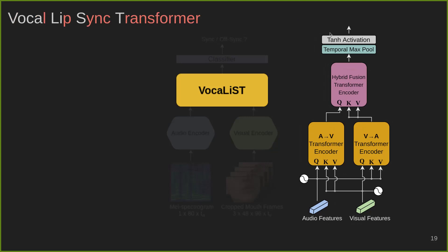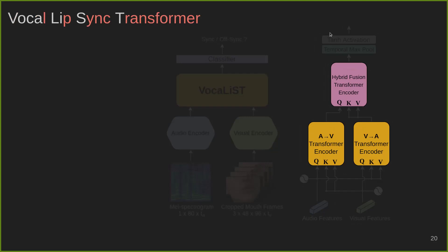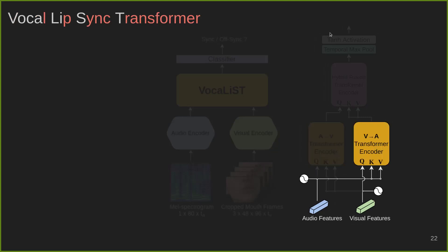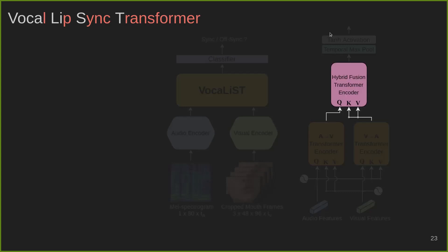Our synchronization block, VOCALIST, is a cross-modal audiovisual transformer. It mainly consists of three cross-modal transformer encoders. The A2V unit takes audio features as the query and visual features as the key and value. In the V2A unit, visual features are passed as the query and audio features form the key and value inputs. For the hybrid fusion transformer unit, the output of the A2V unit forms the query while the key and value are sourced from the output of the V2A unit.